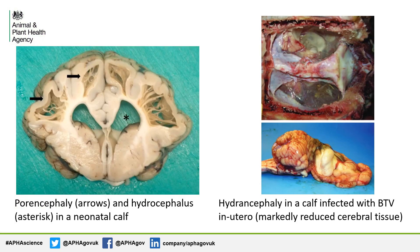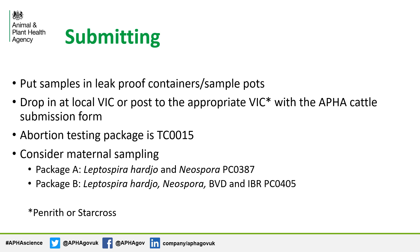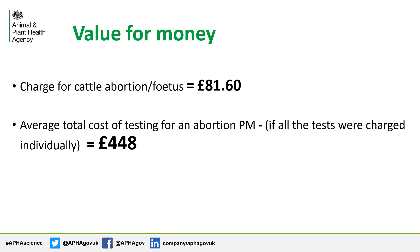These pictures demonstrate porencephaly and hydranencephaly, but it can be really difficult to distinguish between the two. Samples should be put in leak-proof sample pots, labelled, and can either be posted to the appropriate lab or dropped in at your local VI centre — please check with your local VI centre for details. The abortion testing package is TC0015. There are also abortion packages for maternal serology: package A tests for lepto and neospora, package B for lepto, neospora, BVD and IBR. The current cost is £81.60 per submission, but if we were to charge all the tests individually, the average cost of testing for an abortion PM would actually be £448.